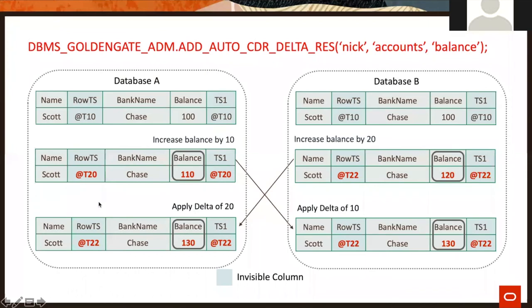Here's a delta resolution example. Both database A and database B start with a balance of 100. The balance is increased by 10 on database A and by 20 on database B. Using time-based or side-based resolution would create an inconsistency. Since balance is a numeric column, delta resolution is used: 10 plus 20 equals a delta of 30, so the total balance becomes 130, and that value is applied to both source and target.